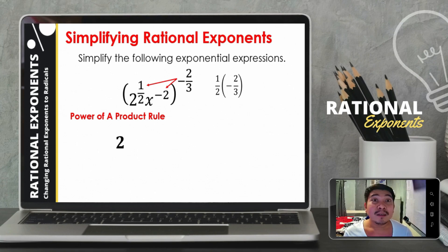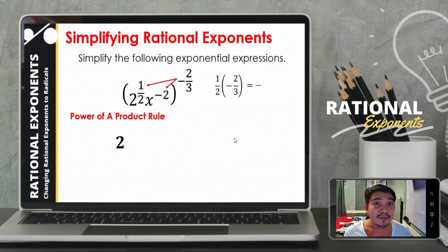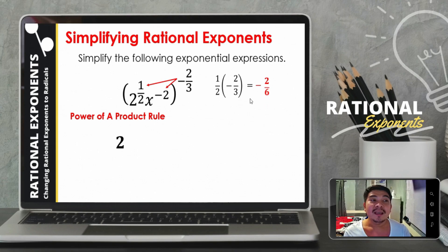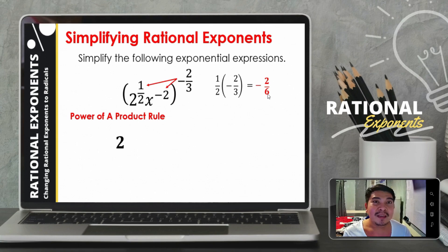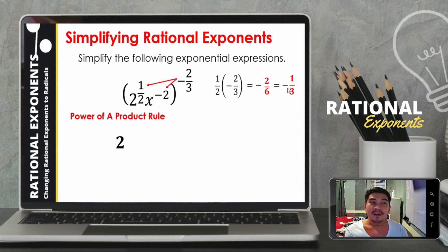When multiplying fractions, we multiply numerator by numerator and denominator by denominator. We are multiplying a positive fraction by a negative fraction, so the result is a negative fraction. 1 times 2 equals 2 in the numerator; 2 times 3 equals 6 in the denominator. Negative 2 over 6 can be simplified: the GCF is 2, giving us negative 1 third. So negative 1 third is the exponent of 2.